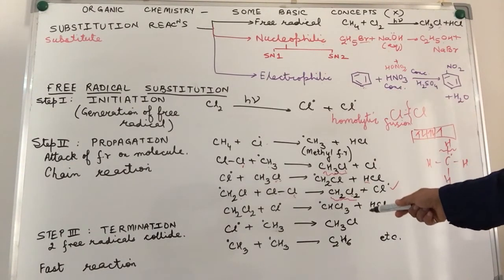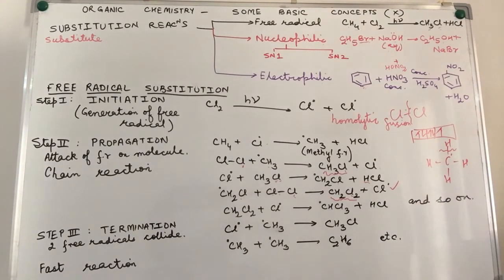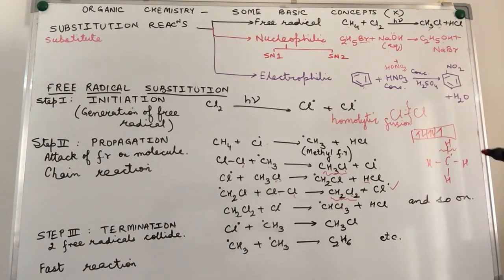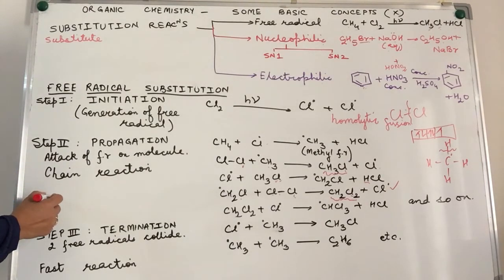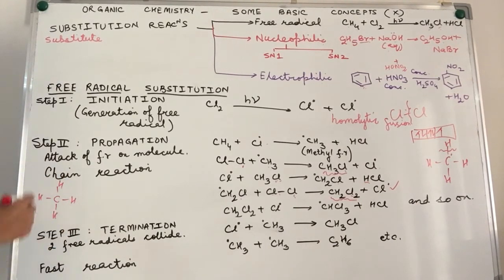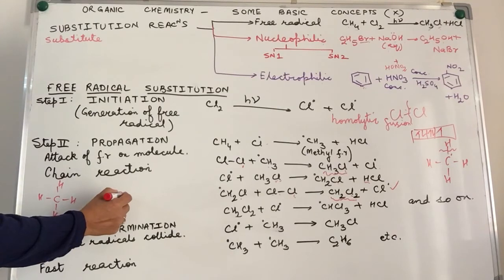So, if you notice, what is happening is it is resulting in a chain reaction. That means it goes on and on. And, at each step, what is happening is the four hydrogens attached to the carbon in methane are being successively replaced by chlorine.